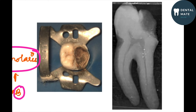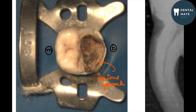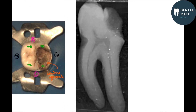This is the case we'll be performing the access opening on today. When we look at the clinical picture, we can see the mesial and distal sides. Since this is a large caries lesion, we'll be taking a caries approach for the access opening. We can identify the mesiobuccal, mesiolingual, distobuccal, and distolingual cusps.